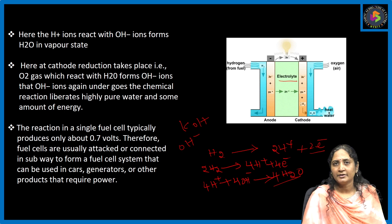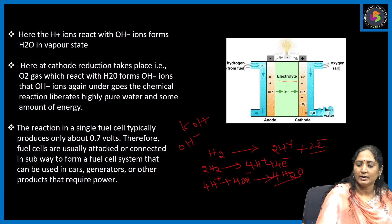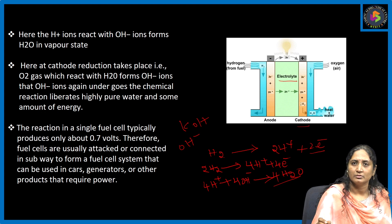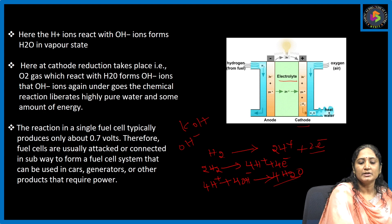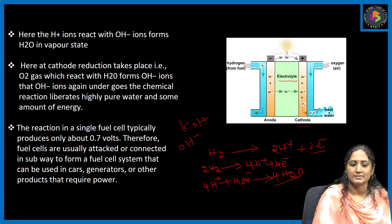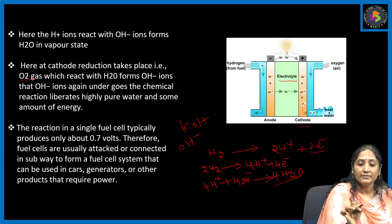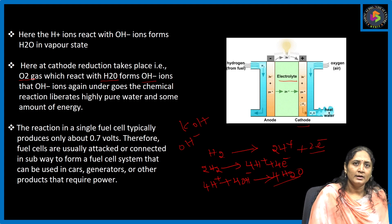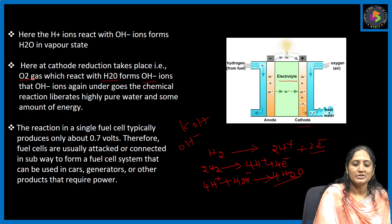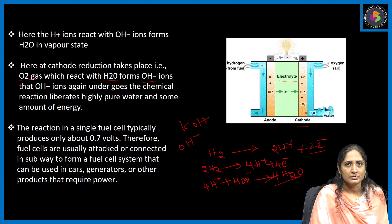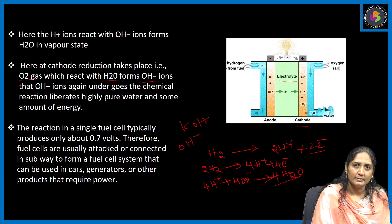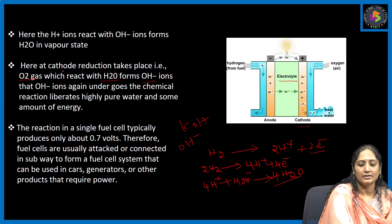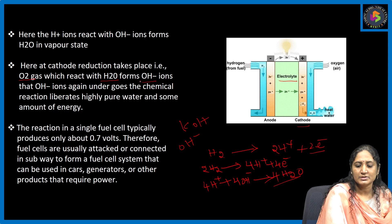At the cathodic side, the reduction reaction takes place. When we pass oxygen gas, the oxygen gas reacts with the liberated H₂O and produces OH⁻ ions again. The reduction process takes place by gaining the electrons released by the anode. The cathode undergoes reduction by gaining electrons. The O₂ gas reacts with H₂O to form OH⁻ ions.